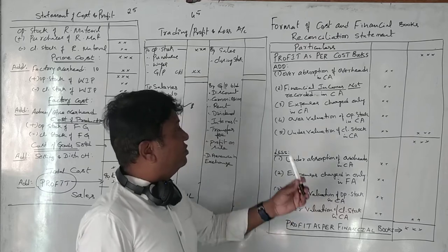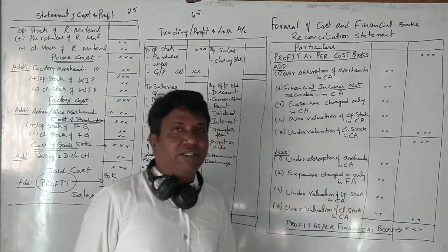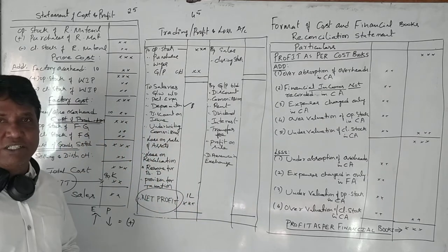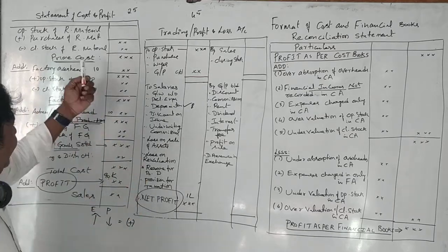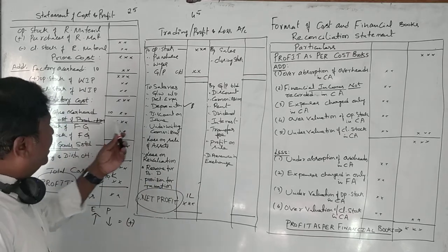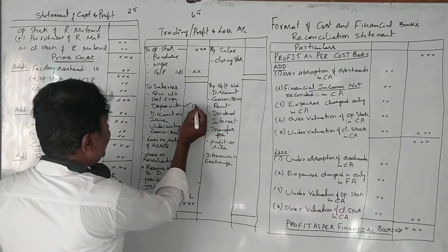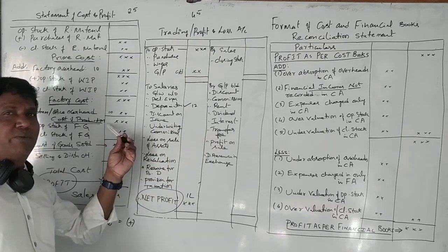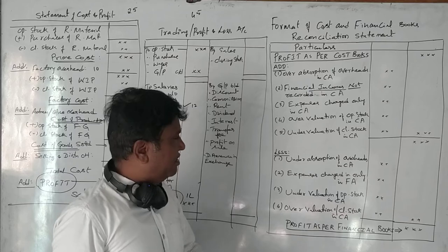We have now finished with all the addition items. Moving to deduction items, the first one is under absorption of overheads in cost accounting. Under absorption means certain overhead expenses are recorded less in cost accounting compared to financial accounting. For example, if depreciation is recorded at 10,000 in cost accounting but 12,000 in financial accounting, the 2,000 under-recorded value should be deducted.